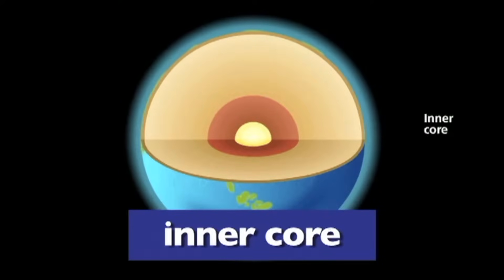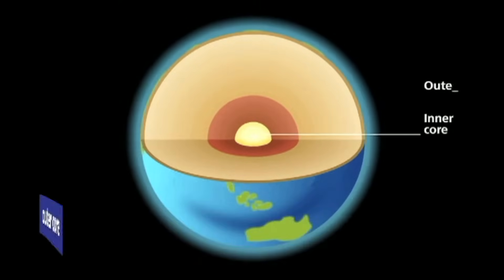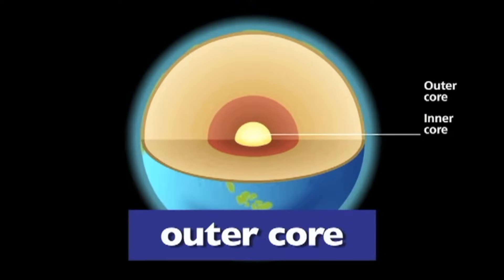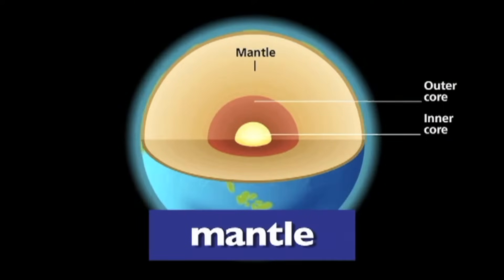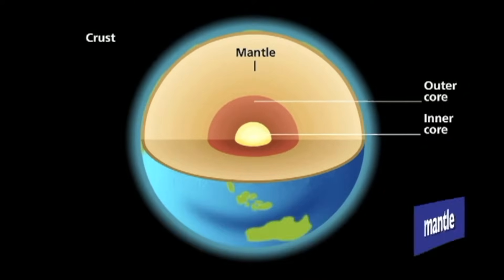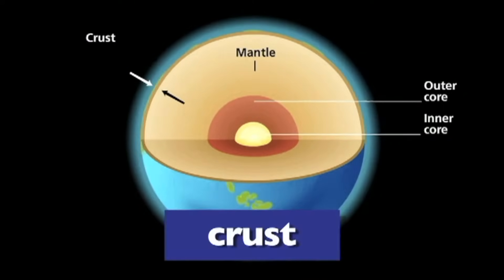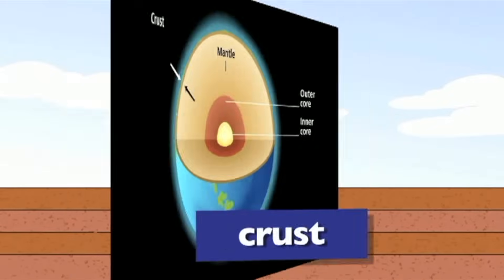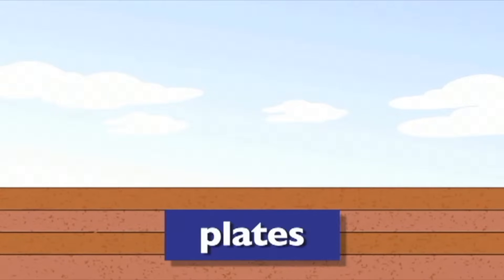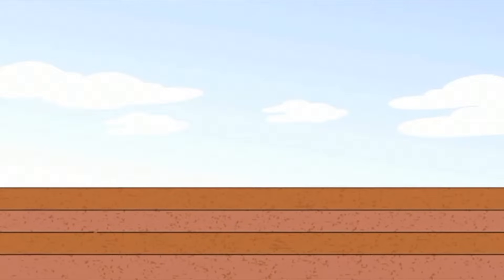The Earth has a solid core in the center, a liquid outer core, and then a mantle of heavy rock which is partially liquid. The part that we live on is the crust. The Earth's crust is made up of large sections called plates. The plates float on the liquid mantle and are constantly moving.